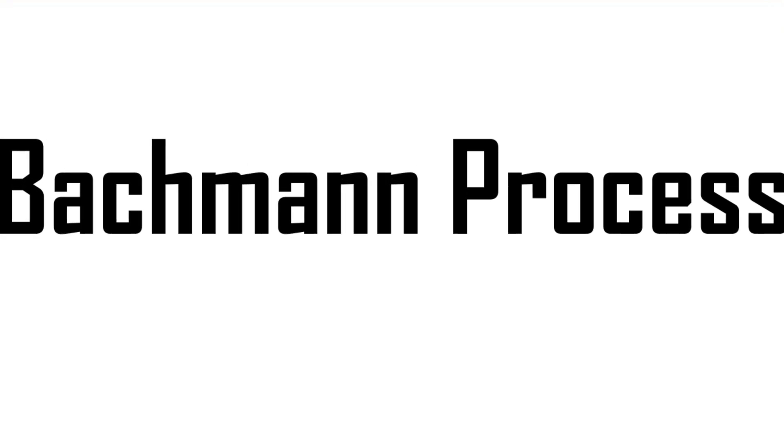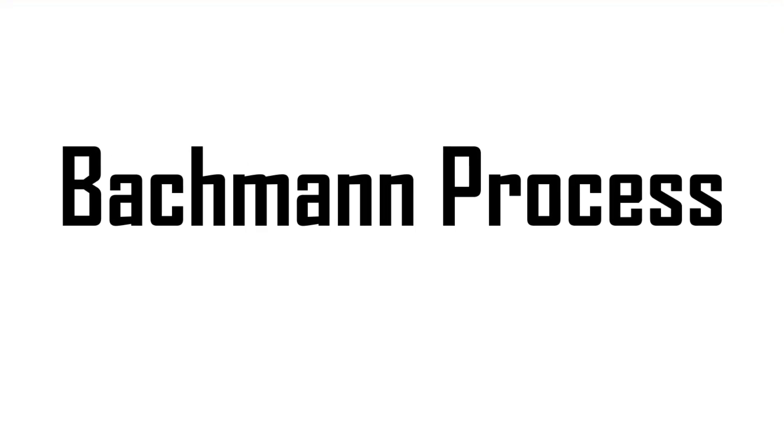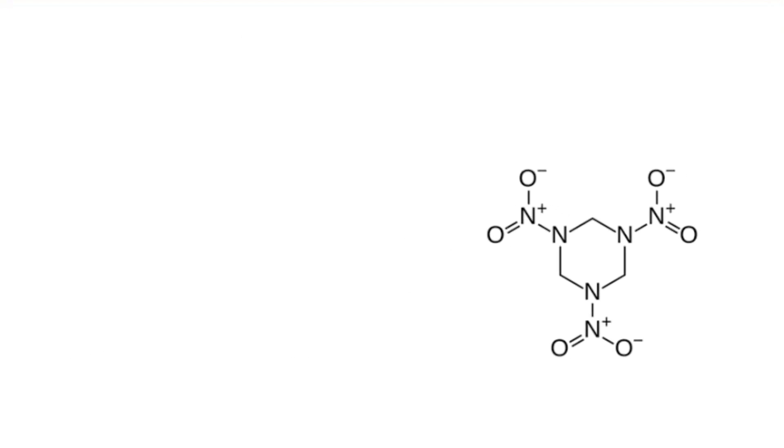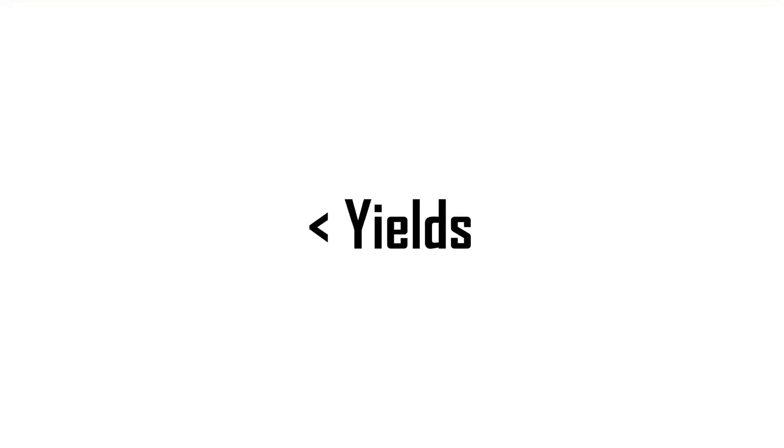But there are also several other ways, like the Bachman process, which is the most widely used industrial method today. In it, hexamine is reacted with ammonium nitrate in the presence of acetic anhydride and nitric acid, leading to RDX formation with better yields and lower byproducts. I might try this method again in the future.